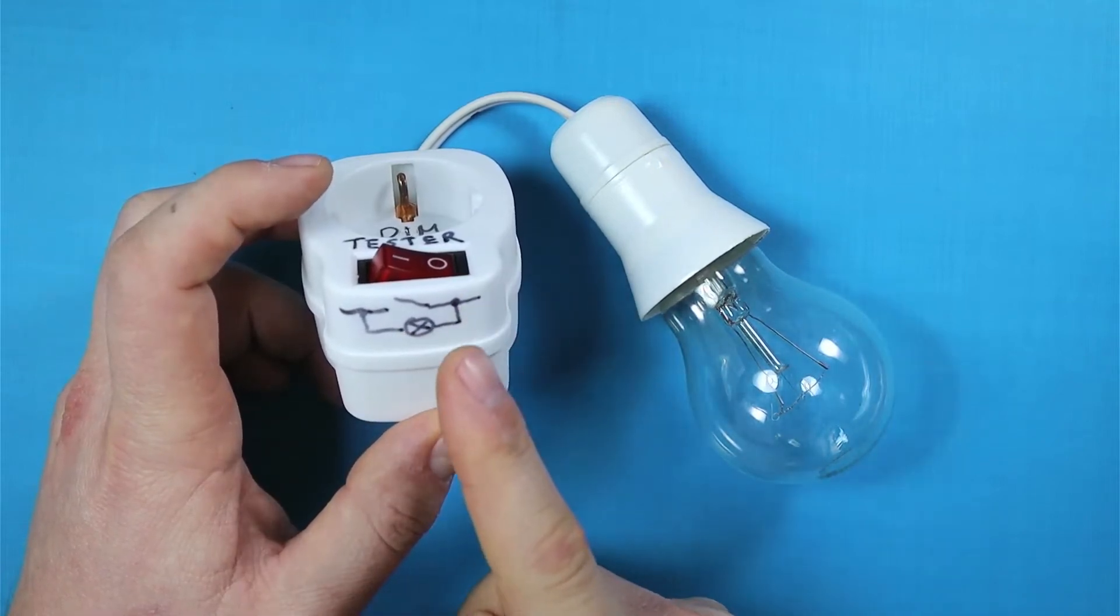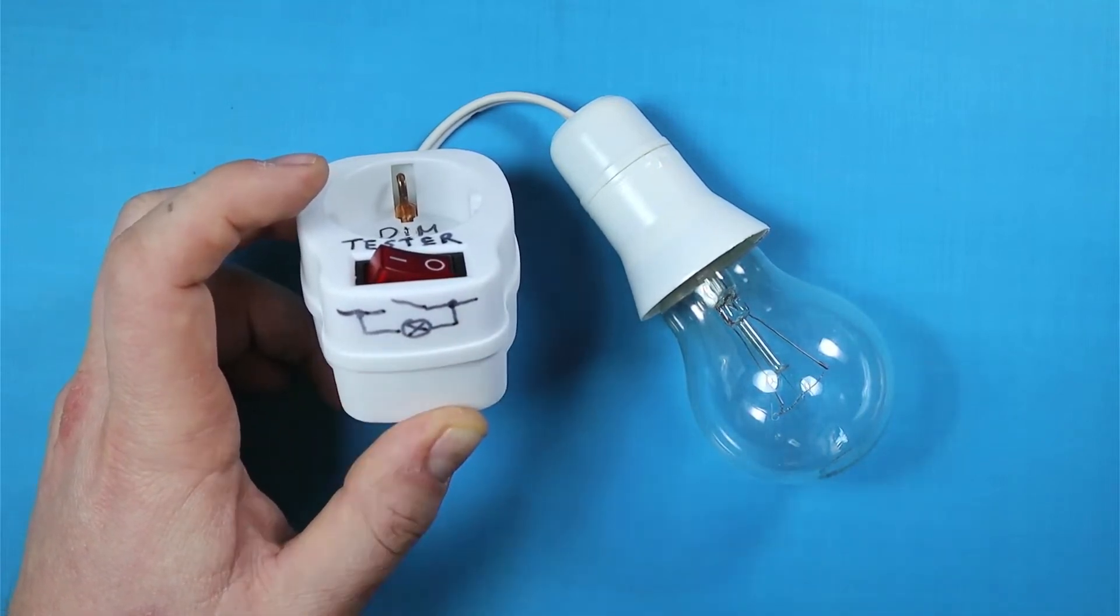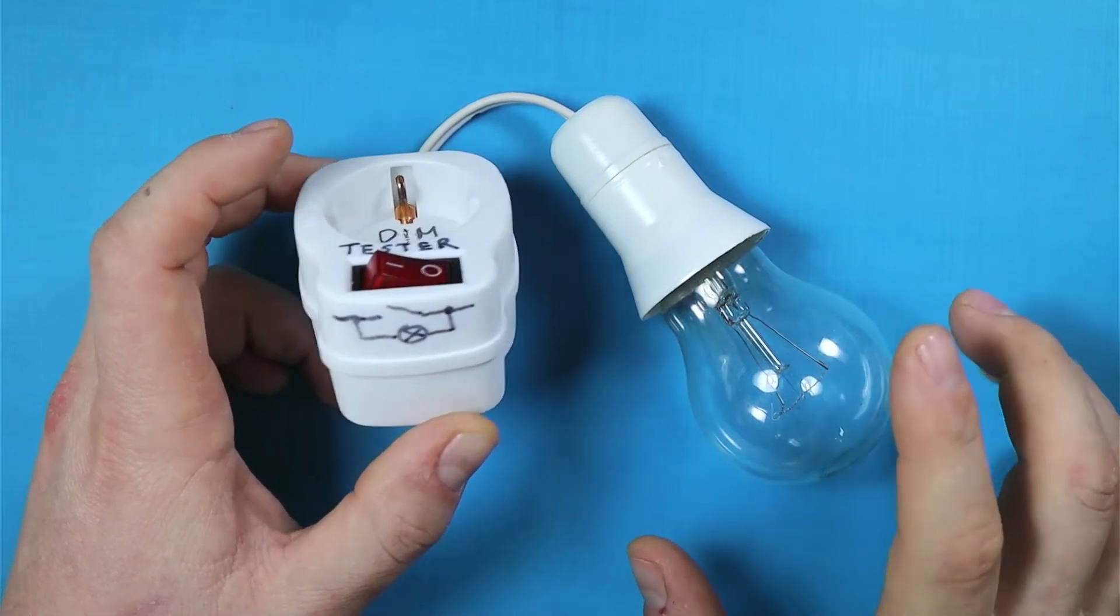With the switch off, the current must go through the light bulb and that is what is protecting our devices.